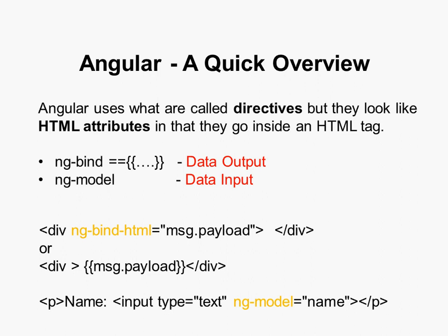Let's take a quick look at Angular. Angular uses what we call directives. They look like HTML attributes — you find them inside an HTML tag. There are two we're concerned with: ng-bind and ng-model. One is for data output and the other for data input. With ng-bind, you write div ng-bind-html equals message.payload, meaning the contents of message.payload goes between the div tags.